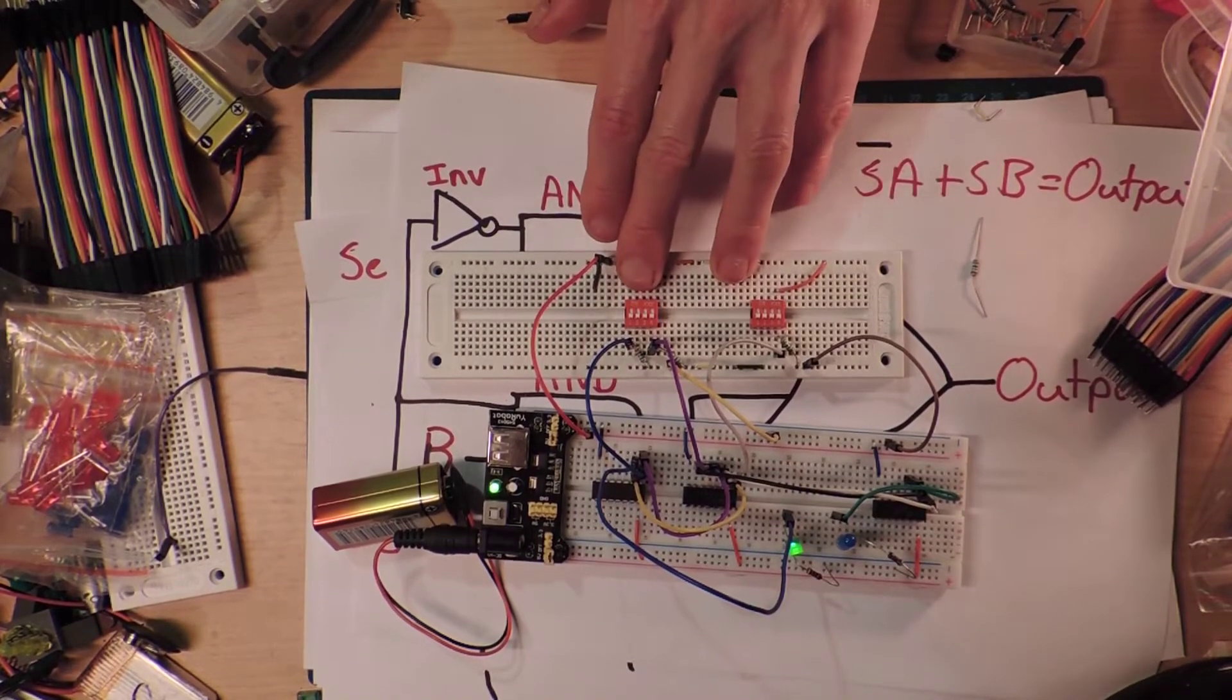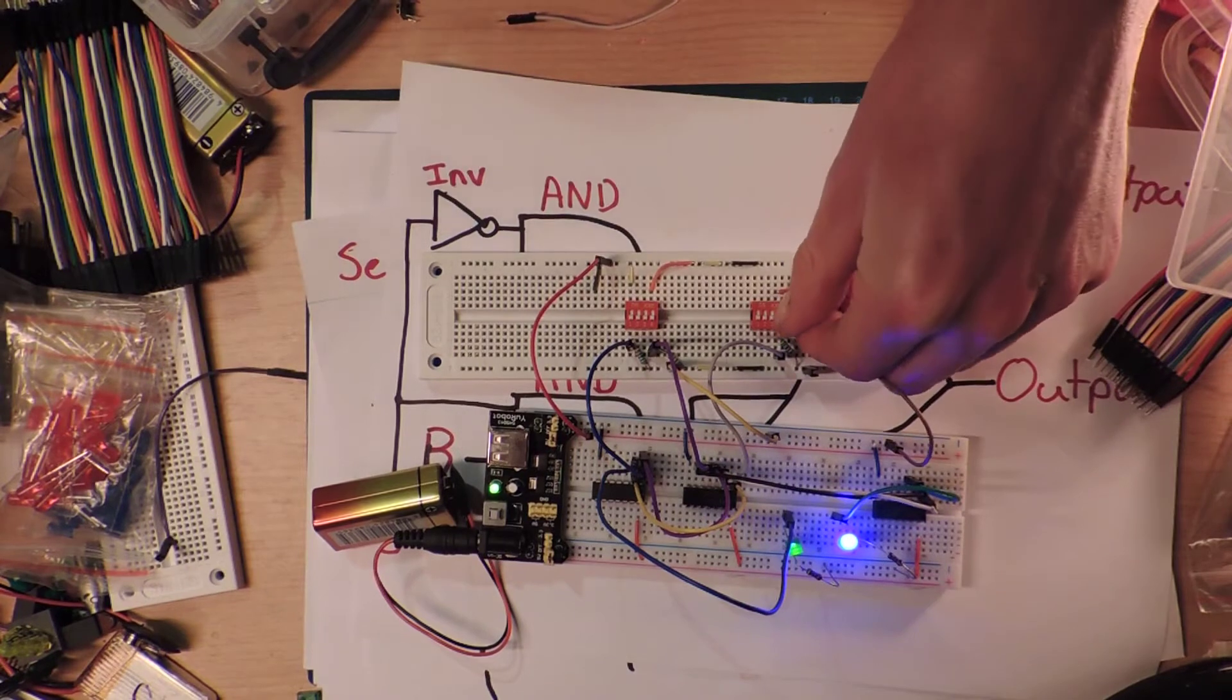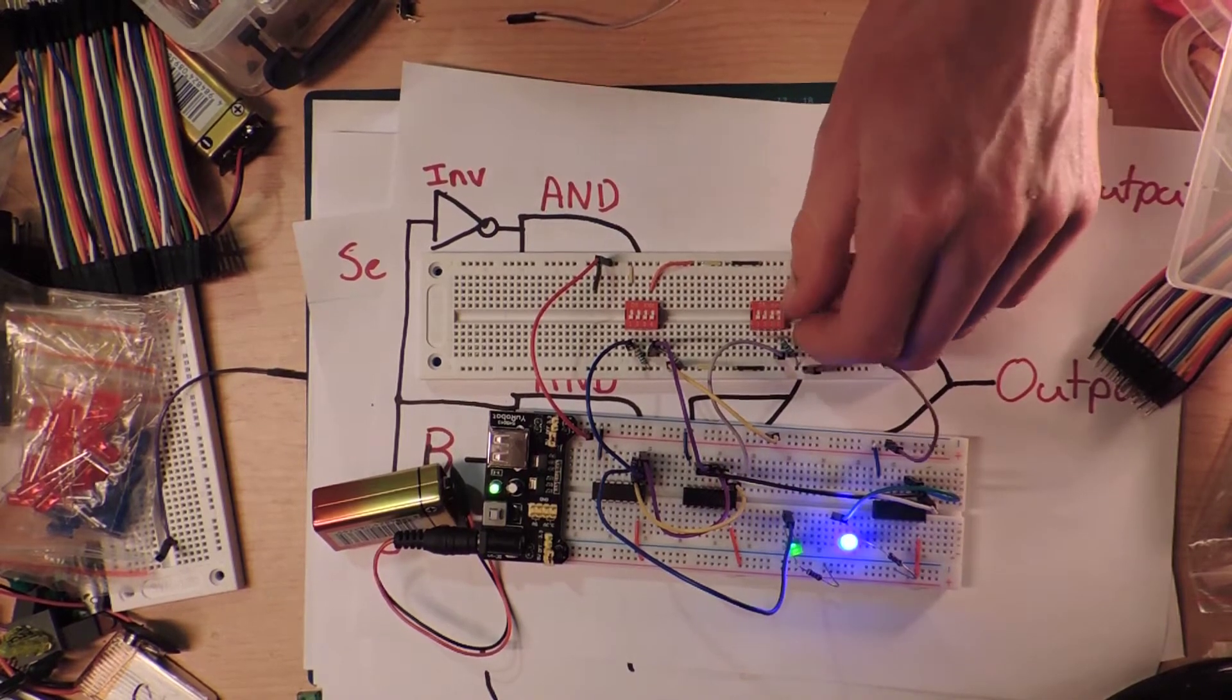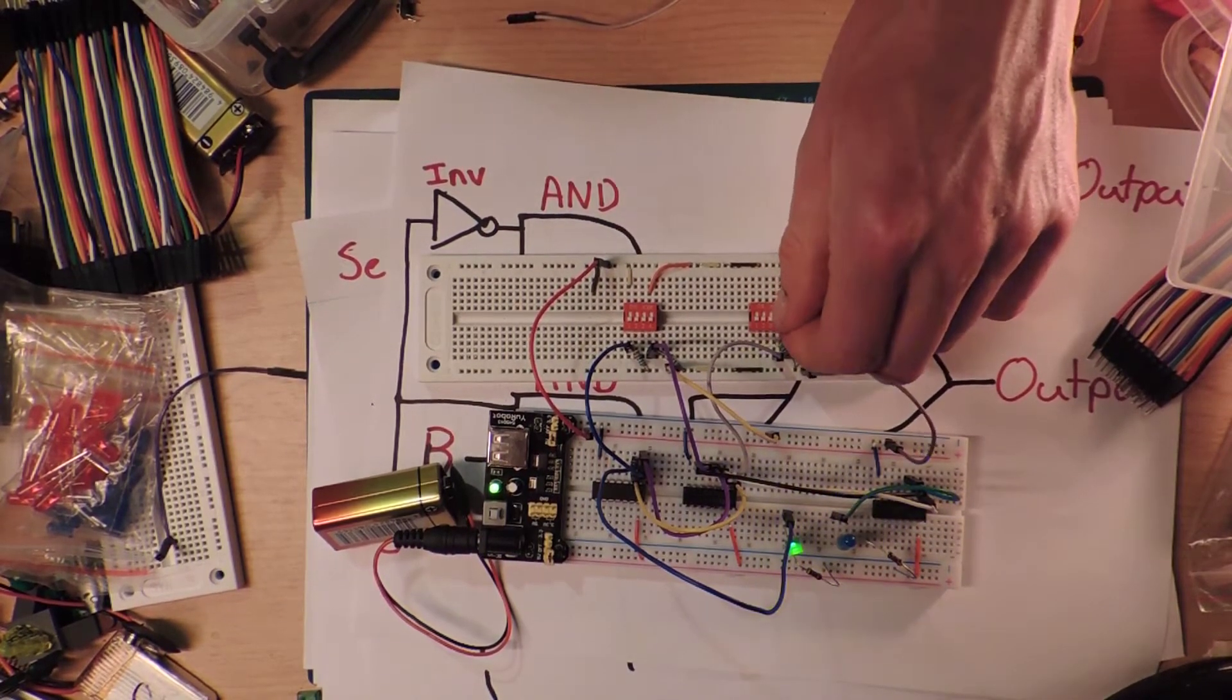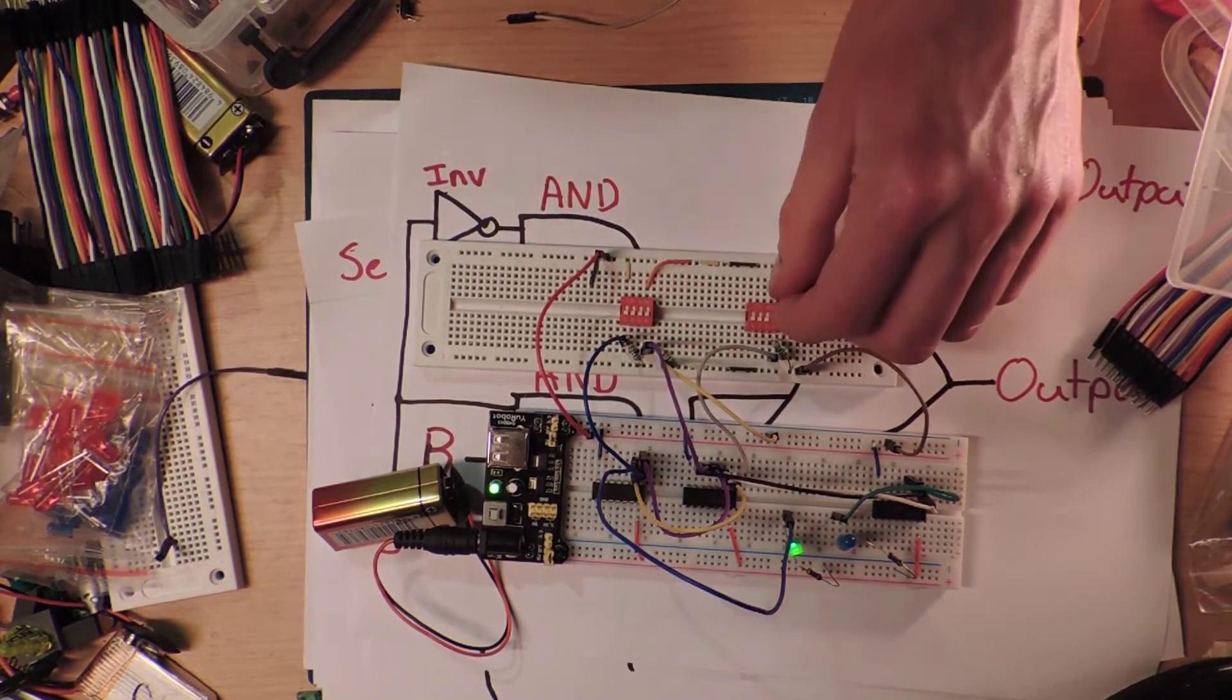If I've done that, then now it is this switch here that makes a difference. So I can switch this on and off and the LED comes on and off. And if I switch this one, nothing happens because this is B right, and select is low.